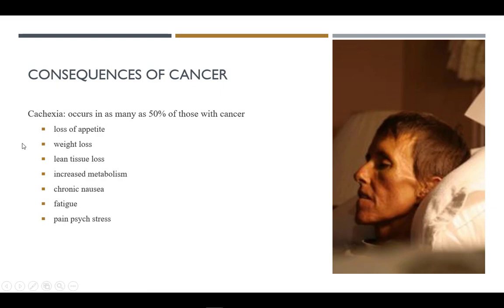One of the worst complications in cancer is cachexia. This is a form of anorexia characterized by increased metabolism, decreased appetite, weight loss, muscle wasting, anemia, fatigue, and psychological stress. The condition occurs in up to 50% of cancer cases. Without adequate nutrition from decreased appetite and loss of lean tissue, the body will not be able to recover, and it often spirals down to slow deterioration towards death.